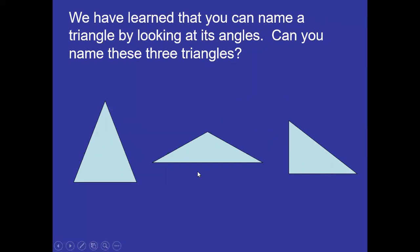We have learned that you can name a triangle by looking at its angles. Can you name these three triangles? The first one is an acute triangle, the second one is an obtuse triangle, and the third one is a right triangle. Just a quick review.